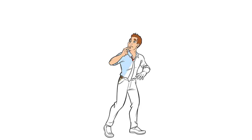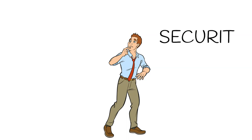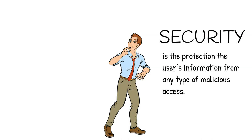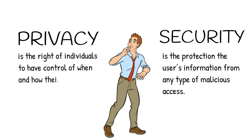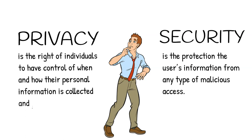I mentioned security and privacy together but I'd like to highlight the difference between those two. Security stands for the protection of the user's information from any types of malicious access — for example preventing theft, corruption and other types of damage — while allowing successful data exchange in the most efficient way. Meanwhile, privacy is the right of individuals to have control of when and how their personal information is collected and processed in the IoT environment.